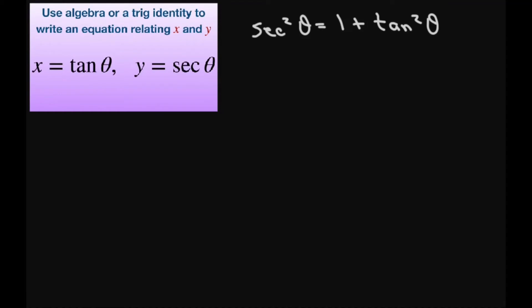Now if I write X equals tangent of theta and Y equals secant theta and we square both sides, then I'm going to do the same thing and use substitution.